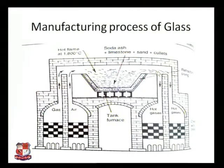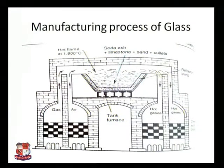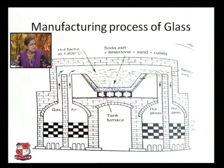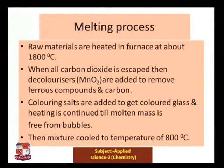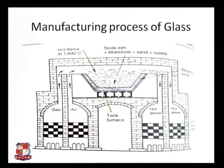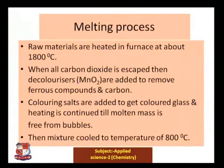Looking at the glass manufacturing process: there are different chambers — a gas-air chamber, a hot gases chamber, and a furnace tank. The hot flame temperature is about 1800 degrees Celsius. The mixture of soda ash, limestone, sand, and cullets is added to the furnace. In the melting process, all raw materials are heated in the furnace at about 1800 degrees Celsius.